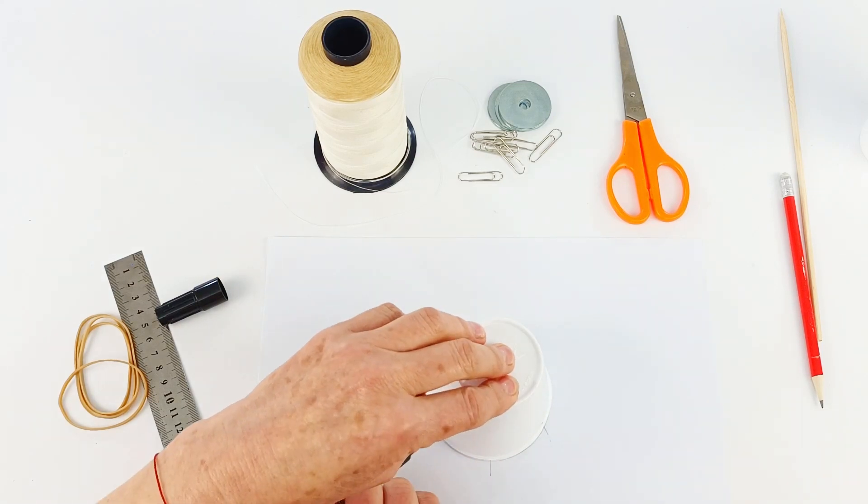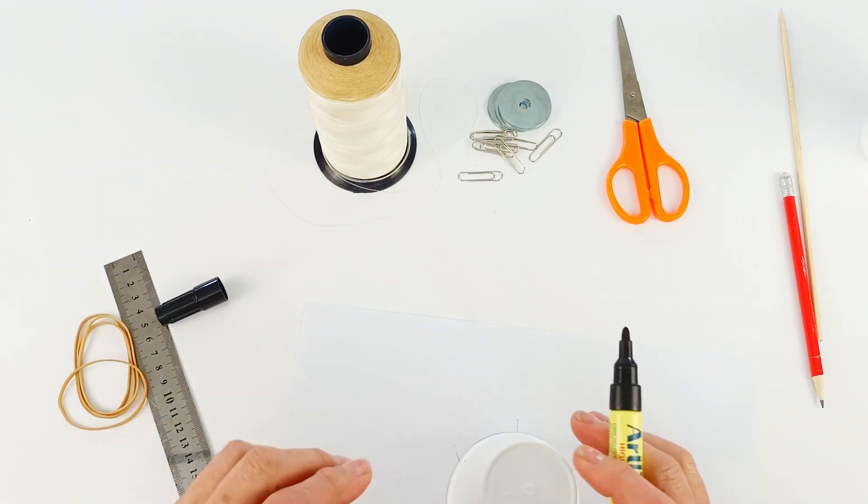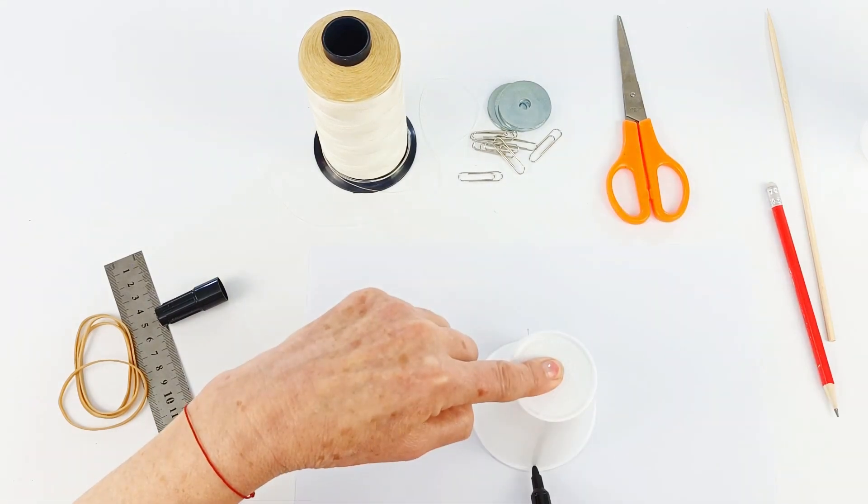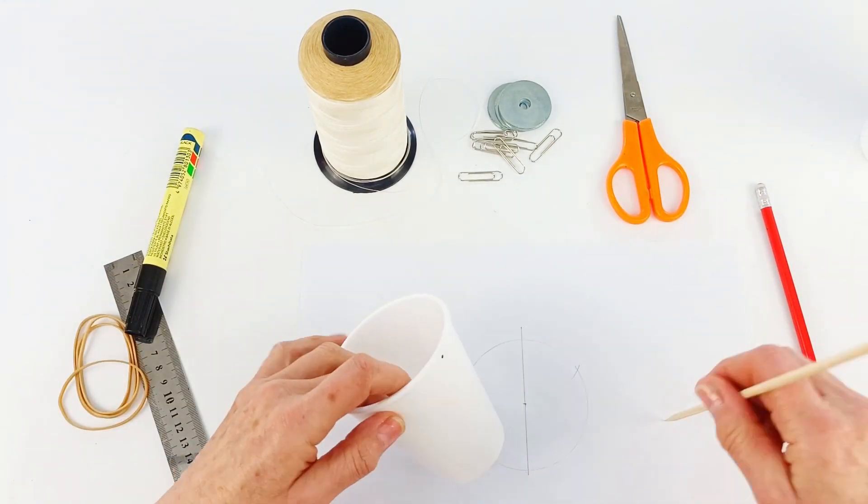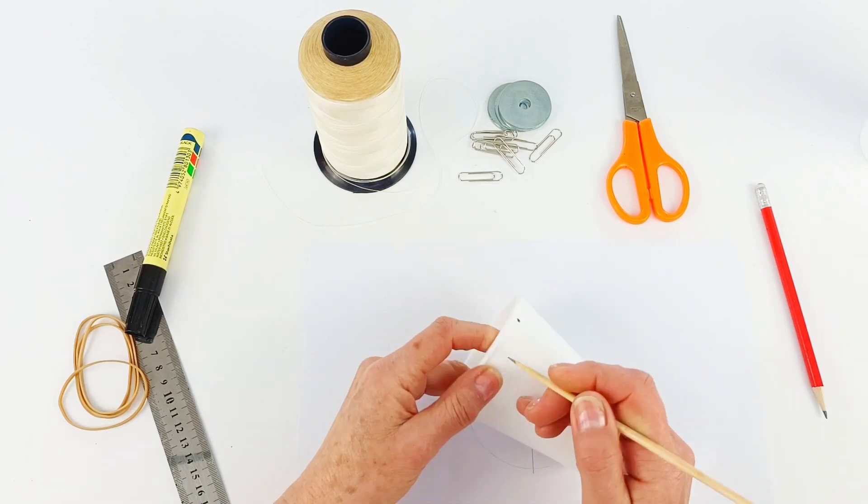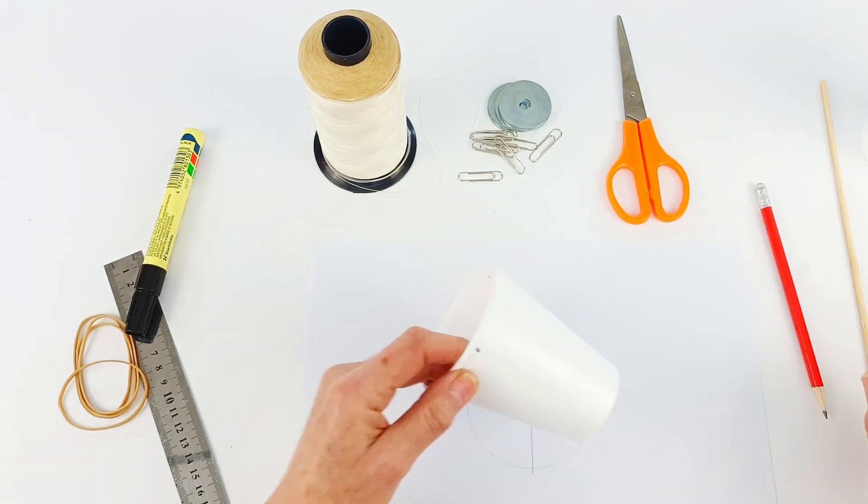We're going to make a small little mark with our marker on all three points. Make sure you get the right three so that they're the same distance apart. And then we're just going to use a skewer. You can use another tool, a little nail, anything like that, just to make a little hole there at the top of the cup.